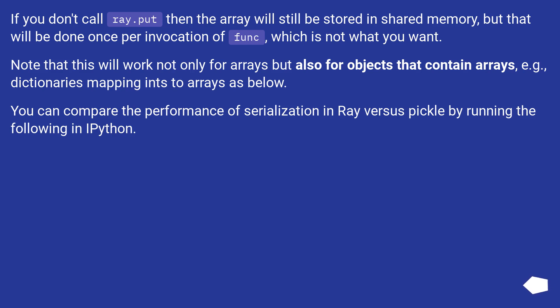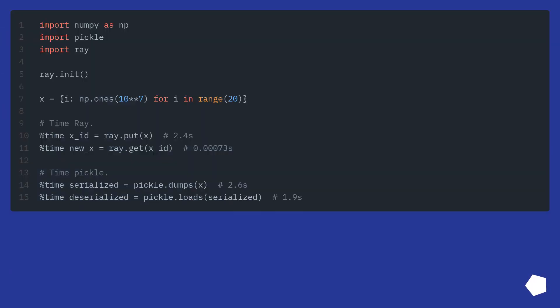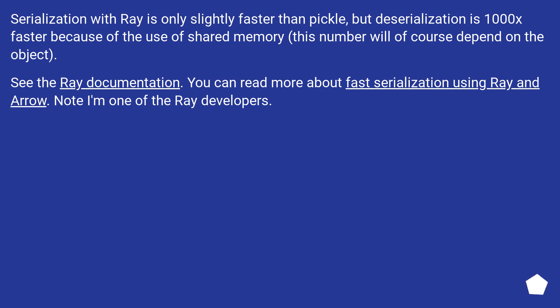You can compare the performance of serialization in Ray vs Pickle by running the following in IPython. Serialization with Ray is only slightly faster than Pickle, but deserialization is 1000x faster because of the use of shared memory — this number will of course depend on the object. See the Ray documentation; you can read more about fast serialization using Ray and Arrow. Note: I'm one of the Ray developers.